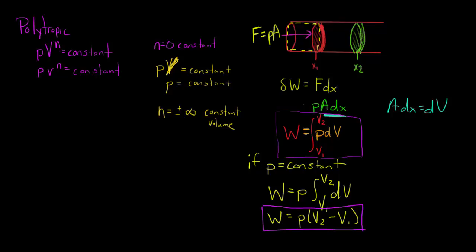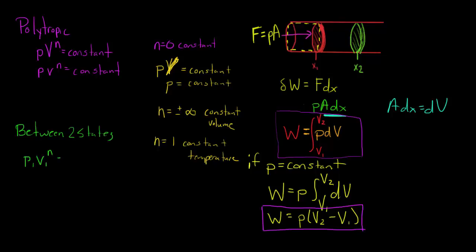If n equals 1, it's a constant temperature process. When going between two states, we have P1·V1^n equals P2·V2^n, and we're going to use these relationships in the upcoming example.